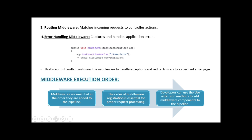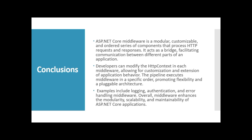Let's talk about the execution order of middlewares. Middlewares are executed in the order they are added to the pipeline. The order of middleware registration is essential for proper request processing. Developers can use the Use extension methods to add middleware components to the pipeline.